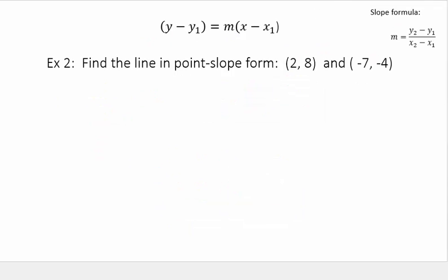Let's try the next one. Find the line in point-slope form. Again, here's your two points. x1, y1, x2, y2. And then find slope.